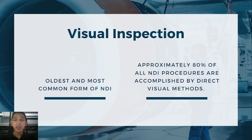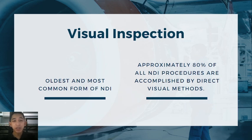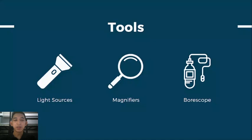Visual inspection is the oldest and the most common form of NDI for aircraft. Approximately 80% of all NDI procedures are accomplished by direct visual methods. Now, what if the cracks are small or another component is blocking the material that needs to be inspected? That's where tools come in. Visual inspection may be enhanced by the use of appropriate tools such as magnifying instruments, borescope, light sources, video scanners, and other devices that can help in seeing the defect within the component.